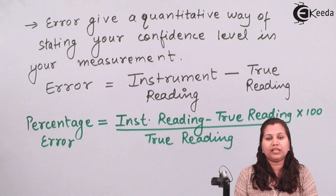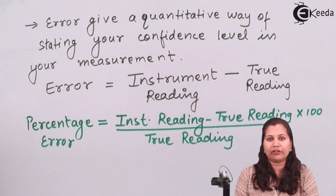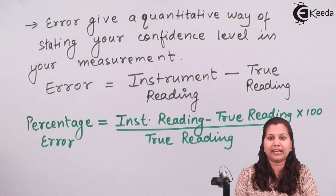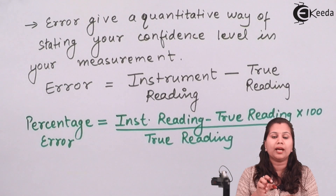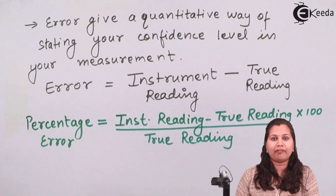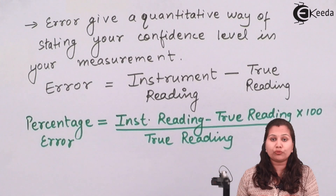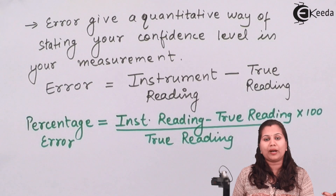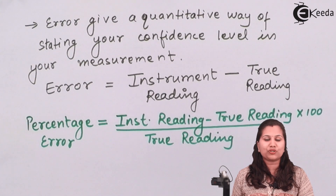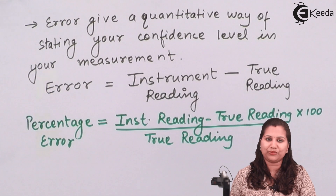In this video we studied what is an error in measurement. Error is defined as the difference between the measured value — that is the value measured by the instrument — minus the true value of the unknown quantity. I hope that this topic is clear to you. Thank you.